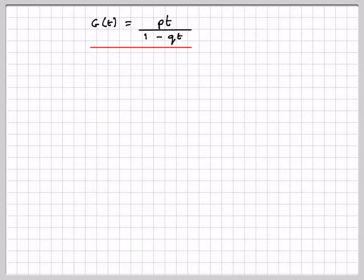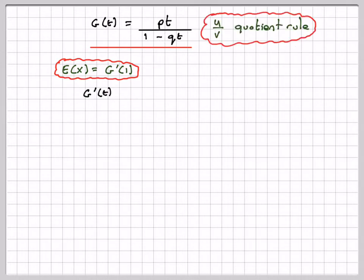So G(t) is equal to that. Now, if we want to find the expectation, we need to find G'(1). So, differentiating this, this is u over v, we use the quotient rule because we've got t here and t here.